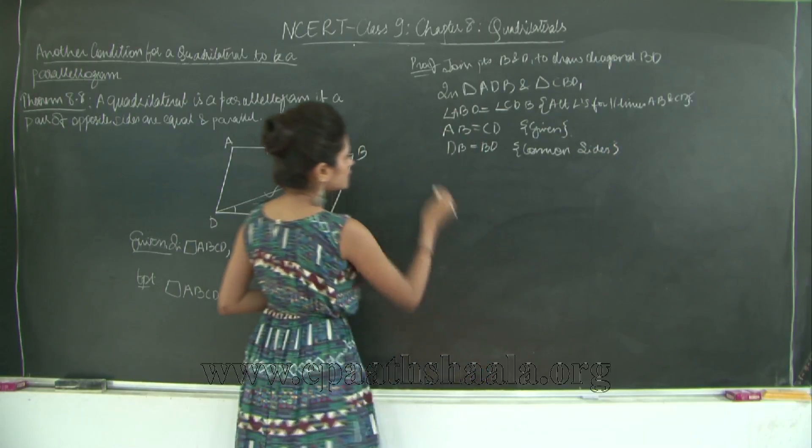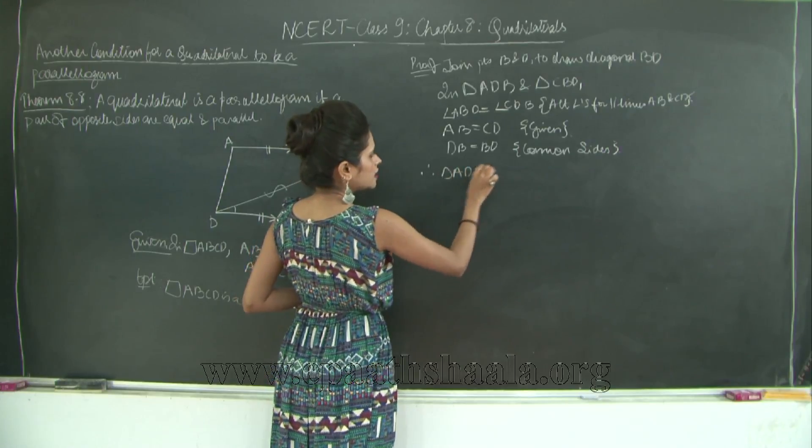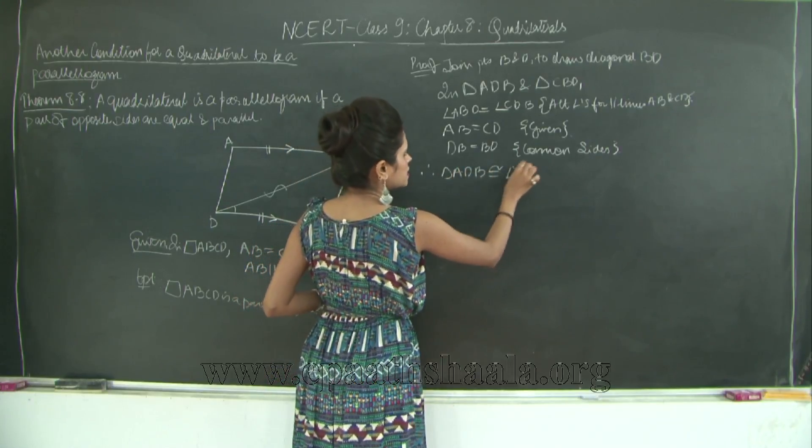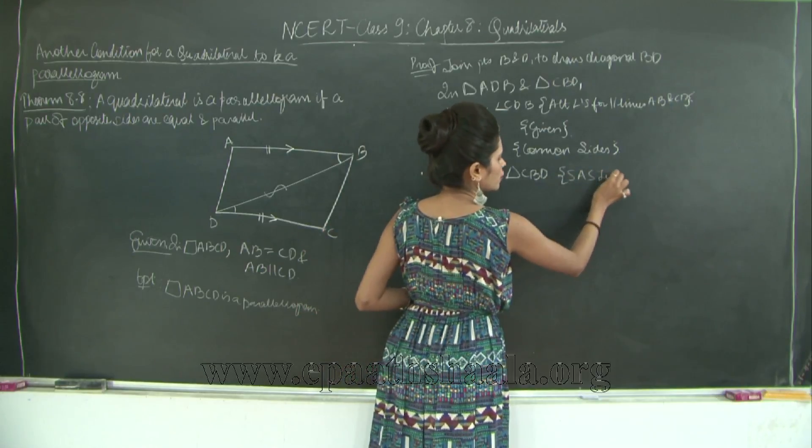Therefore my two triangles are congruent, that is triangle ADB is congruent to triangle CBD by side angle side test of congruence.